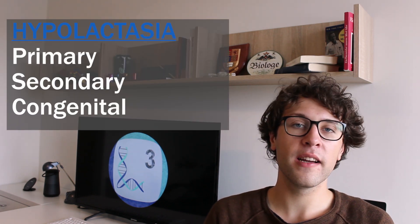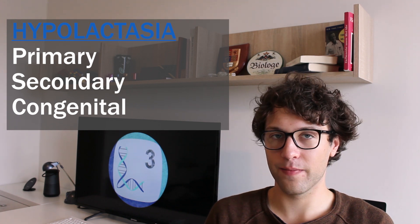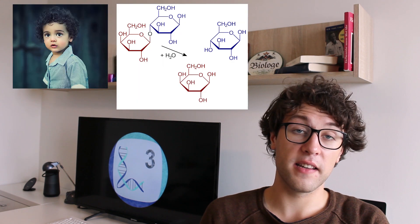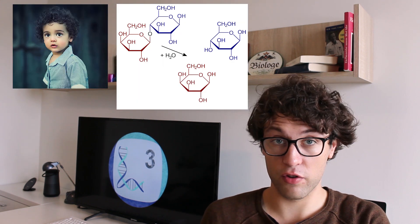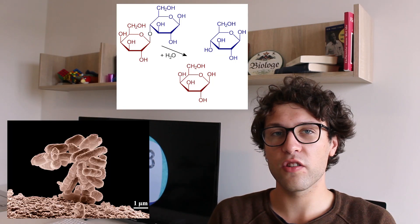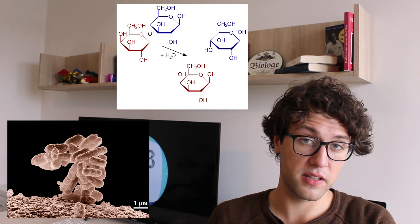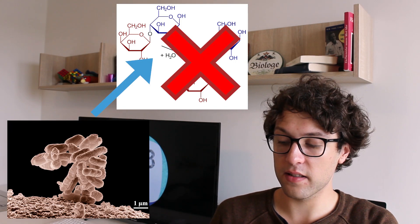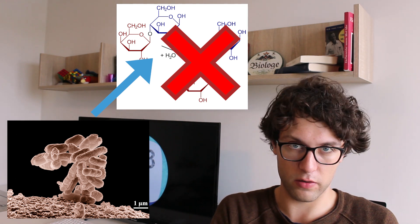We can distinguish between three types of hypolactasia: primary, secondary and congenital. In the majority of cases, people suffer from primary hypolactasia. In these cases, they are able to digest lactose as children but lose the ability once they reach adolescence. Secondary hypolactasia is found in adults which would normally be lactose tolerant. Here a gastrointestinal illness leads to damages in the intestine which then leads to the inability to break down lactose. This condition, however, is usually reversible and people become lactose tolerant again.